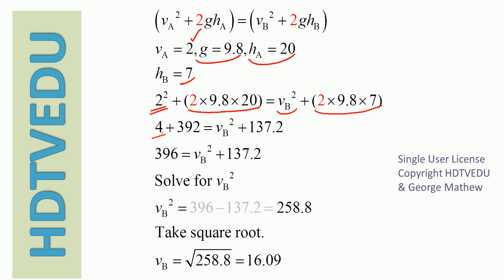2 squared is 4; 2 times 9.8 times 20 is 392; so the left side is 396. On the right side, 2 times 9.8 times 7 is 137.2. So 396 equals speed at B squared plus 137.2. Subtract 137.2 from both sides: speed at B squared equals 396 minus 137.2, which is 258.8. Do not forget that is the square of the speed — take the square root on both sides.